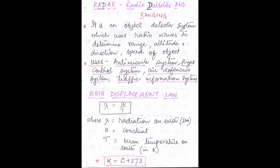Now I will discuss about Wien's Displacement Law for remote sensing. The formula is: lambda equals A divided by T, where lambda is the radiation on the earth surface expressed in micrometers, A is a constant, and T is the mean temperature on the surface of the earth in Kelvin. By this formula we can find the radiation on the earth surface.